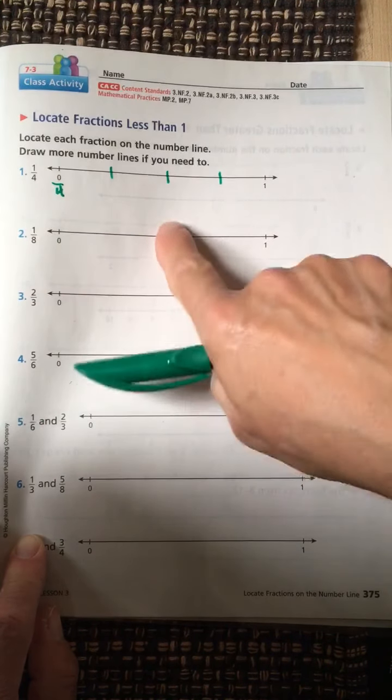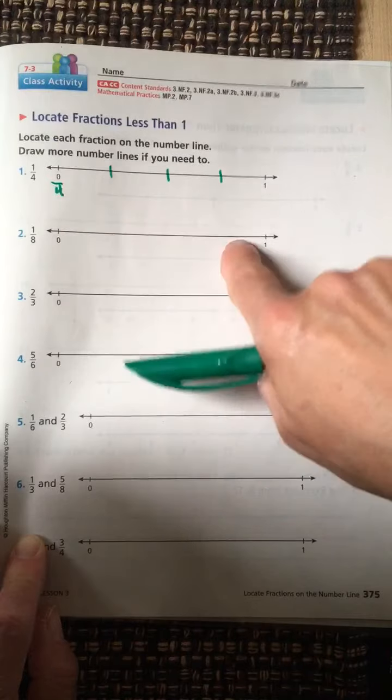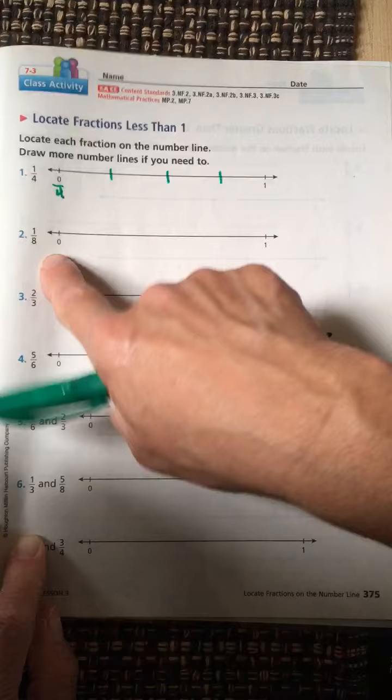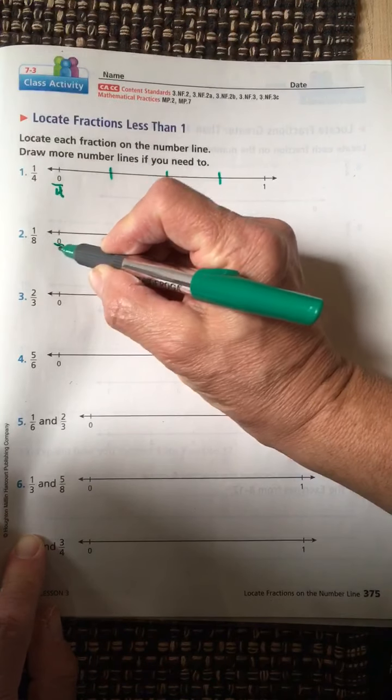This is an even number. Divide it in half, then divide each side into equal parts till you get eight segments, then label them. Zero eighths, one eighth, two eighths.